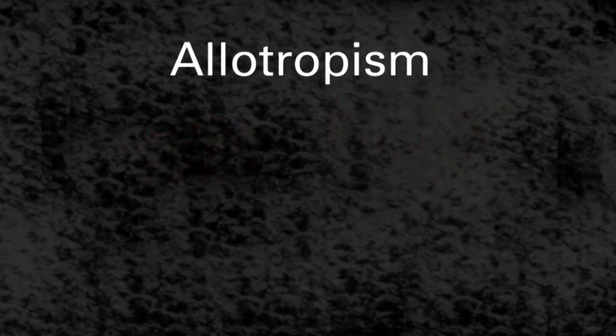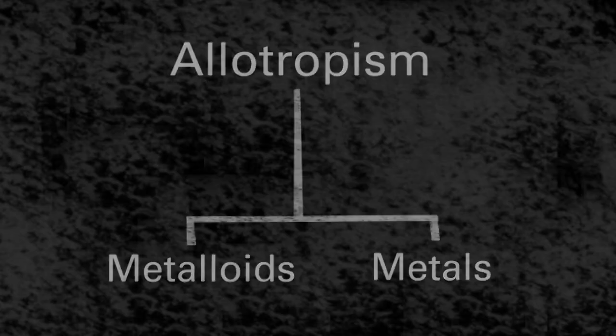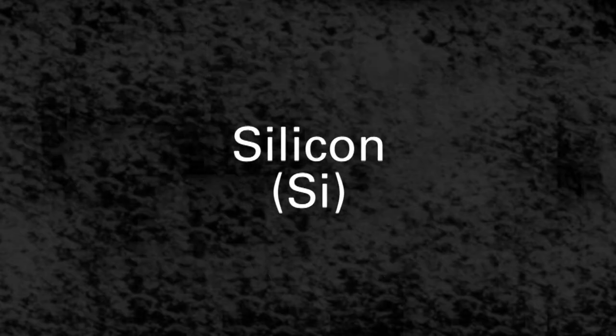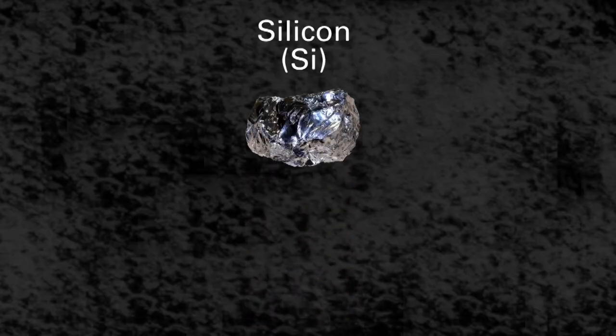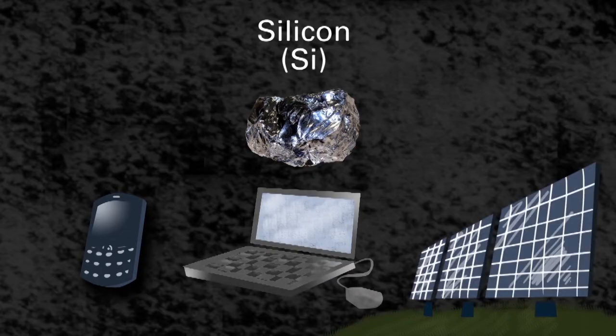This allotropism can also exist in certain metalloids and metals. Silicon is a very important element. Silicon is used in circuits of many electronic devices, such as your mobile phone and laptop, and in solar cells.